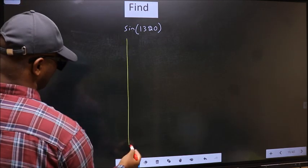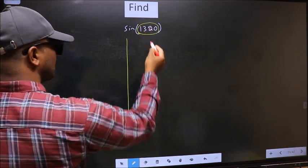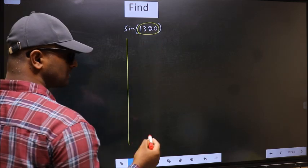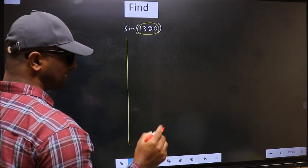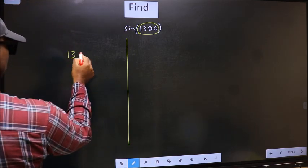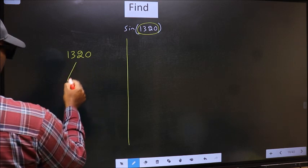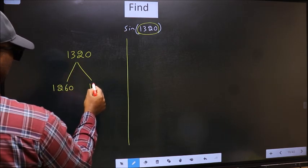Here we have 1320. Now you should check which two multiples of 180 the value 1320 lies between. What I mean is 1320 lies between 1260 and 1440.